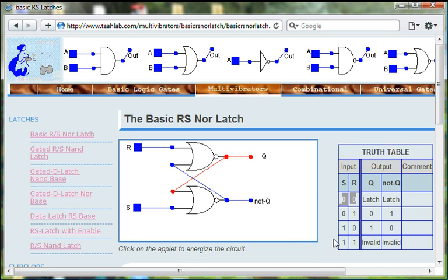The fourth set of input conditions is when both the set switch and the reset switch are on or set to 1. R is 1, S is 1, and we see that both of the outputs are equal to 0 or to off or to low.